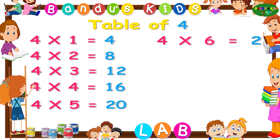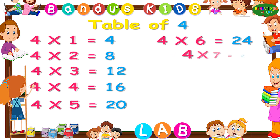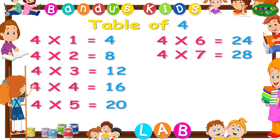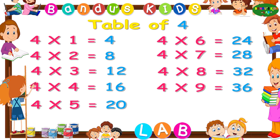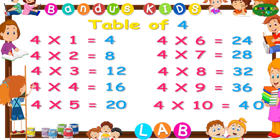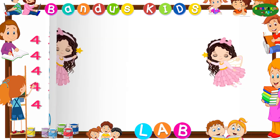Four sixes are twenty-four. Four sevens are twenty-eight. Four eights are thirty-two. Four nines are thirty-six. Four tens are forty.